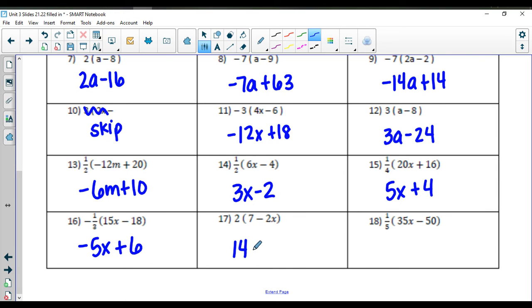Seventeen, we're going to have fourteen minus four x. And finally, in number eighteen, we're going to have seven x minus ten. So those are all your distributive property practice.